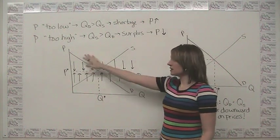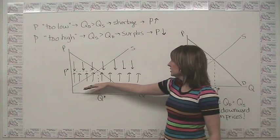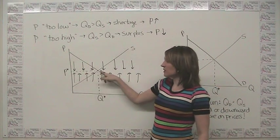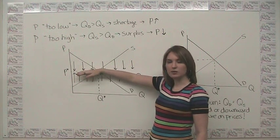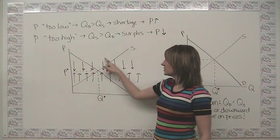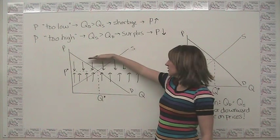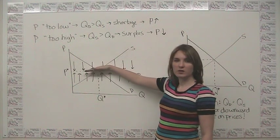Graphically, we can say the situation looks like this. At all prices below this meeting point here, there's going to be a shortage, which drives prices up. And at all prices above this meeting point, you're going to have a surplus, which drives prices down.